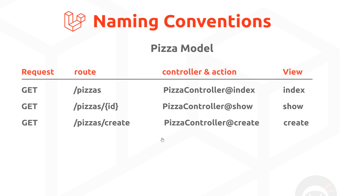Imagine we had a form to add a new record to the database — we'd go to '/pizzas/create' to see that view, that form, and we'd use a 'create' action on the PizzaController to return the create view. Again, this is just convention; you don't have to follow it. I'm going to follow it from now on so everything is structured a bit better, and there will be more rows added to this convention chart as we go on.